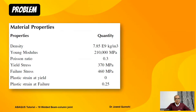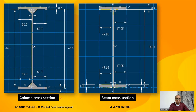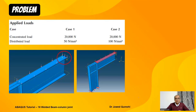The material properties: Young's modulus, Poisson's ratio, yield stress, and failure stress are given, which will indicate how the joint is going to fail. Plastic strain at yield is 0, and at failure it is 0.25. Normally you can expect plastic strain in the range of 0.18 to 0.22, but here it is given as 0.25. These are the cross-sections for the column and beam.